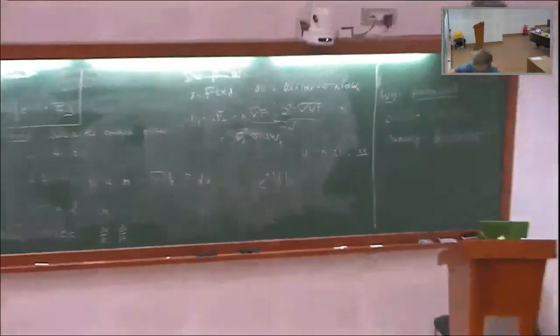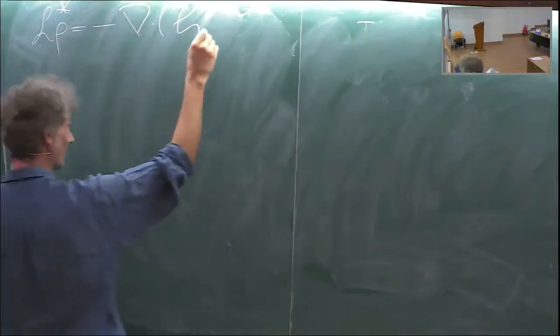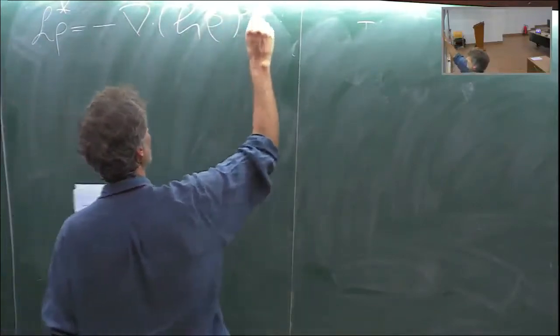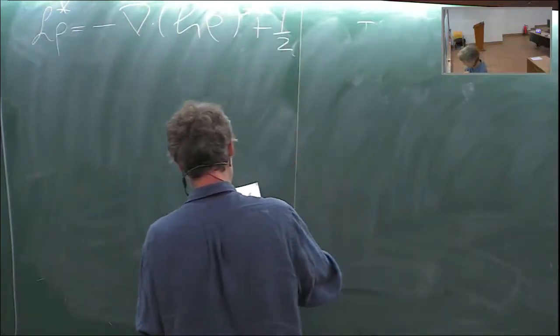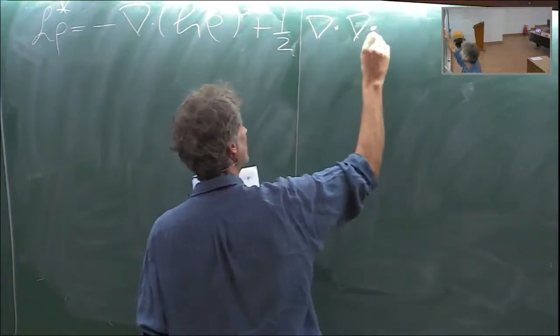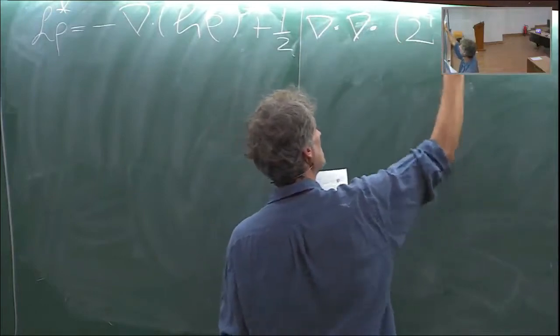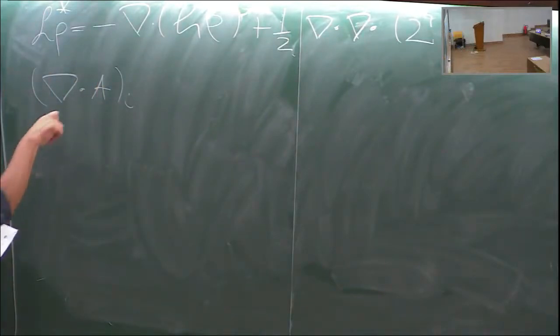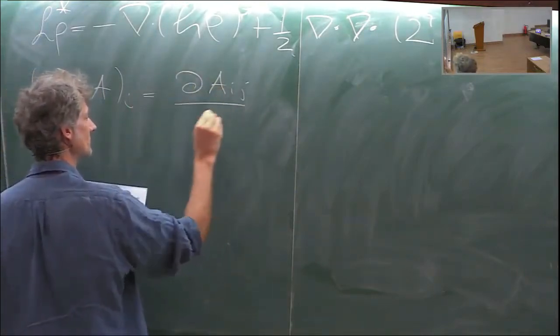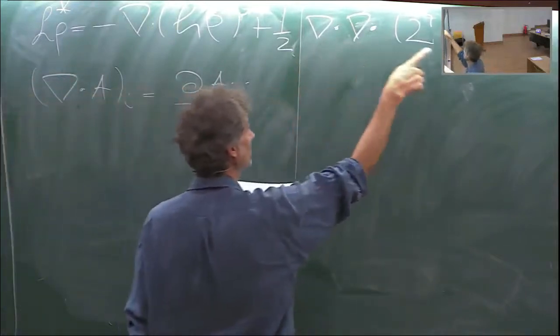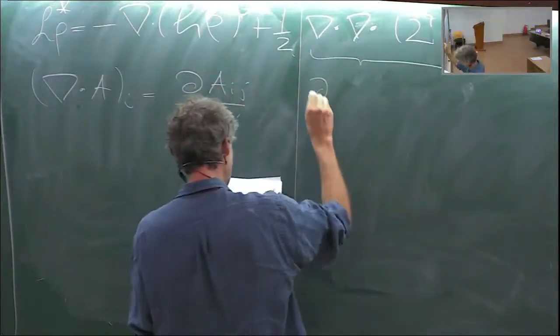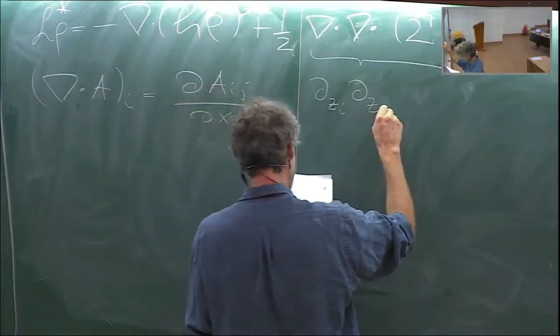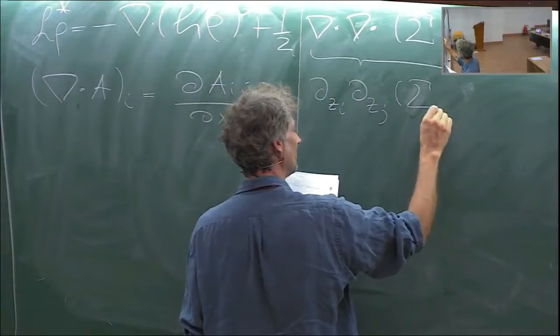For the density picture, we consider the formal L² adjoint L*, which is: L* ρ = -div(hρ) + ½∑_{i,j} ∂²/∂z_i∂z_j (Σ_{ij} ρ). If we have nice unique solutions to the SDE, then the density ρ satisfies the Fokker-Planck equation: ∂ρ/∂t = L*ρ. This is the forward equation, and again t must be positive.